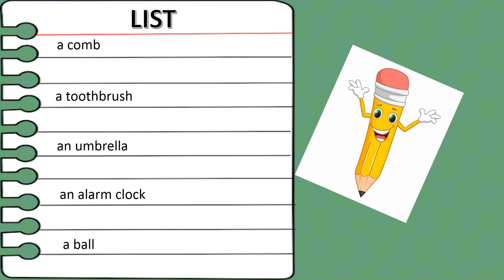There are two words in Ira's list that start with vowels. They are 'alarm clock' and 'umbrella'. The word 'alarm' starts with the vowel 'a' and the word 'umbrella' starts with the vowel 'u'. So we use 'an' before these words.